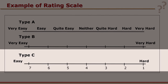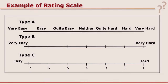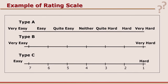The third type shows marks or scores. It goes from easy to hard, but instead of showing categories, it gives numerical scores: 7, 6, 5, 4, 3, 2, 1. The rater puts a tick mark or circles the number based on their judgment about the trait.